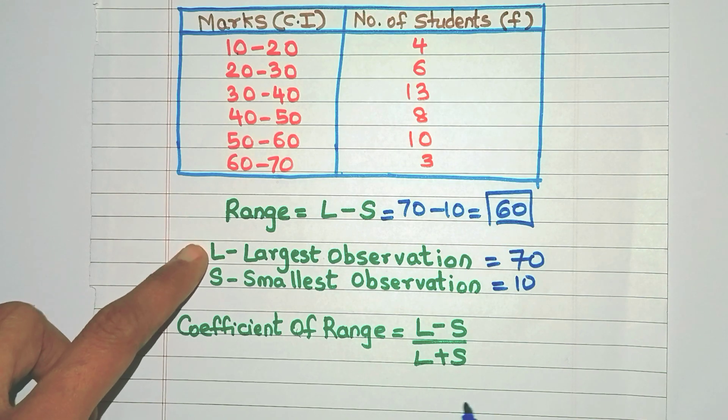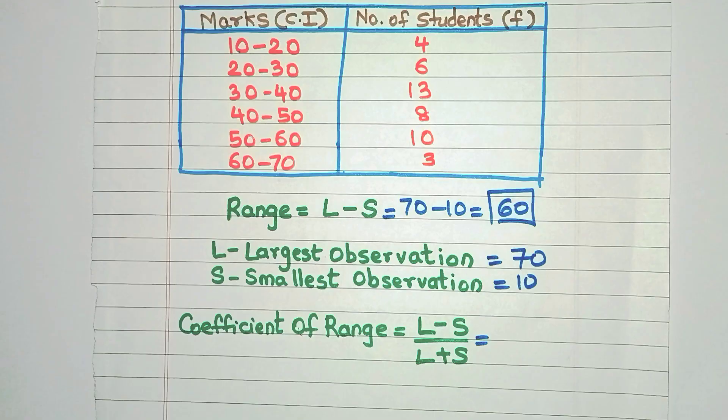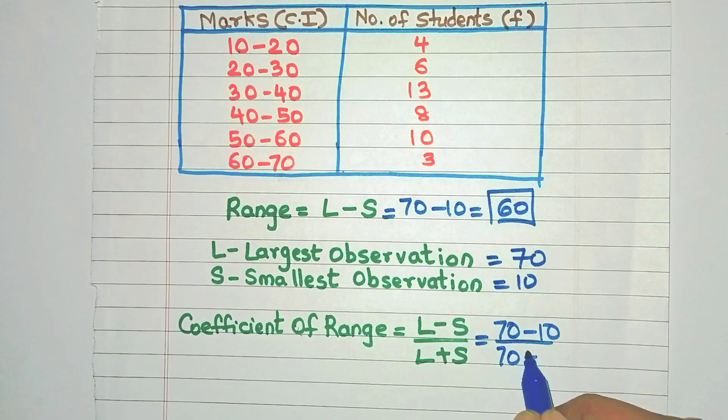So the same largest observation, smallest observation. We need to substitute over here. But it's a ratio. So let's find it out. We know it's 70 minus 10 divided by 70 plus 10. So here it will be 60 by 80.